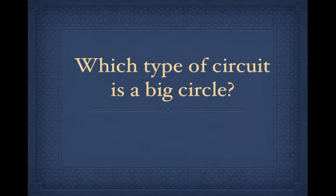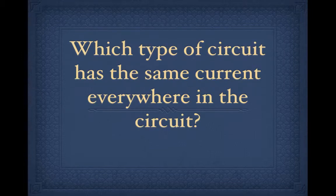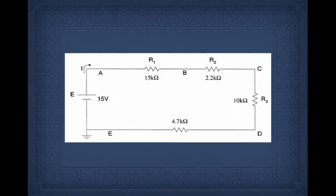Which type of circuit is a big circle? A series circuit. Which type of circuit has the same current everywhere? It means the same electrons go everywhere. A series circuit, there's only one path for them to follow. Here's an example of a series circuit. Only one path for the electricity to go through.